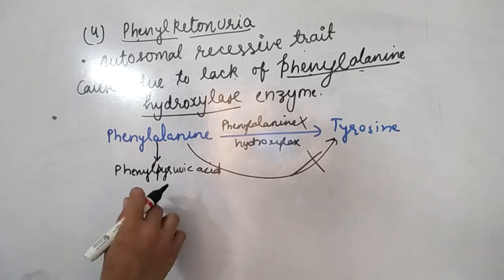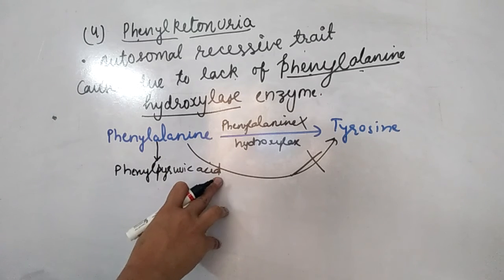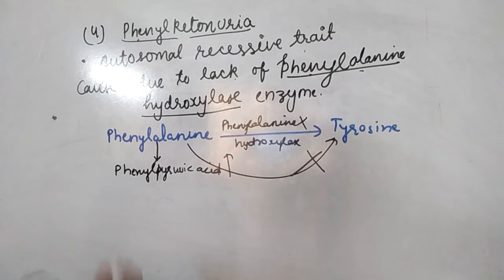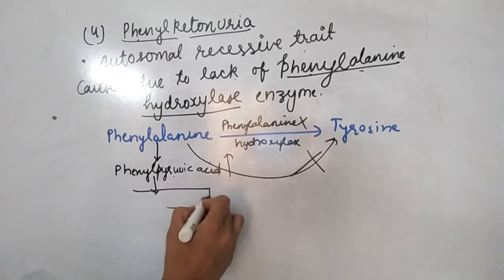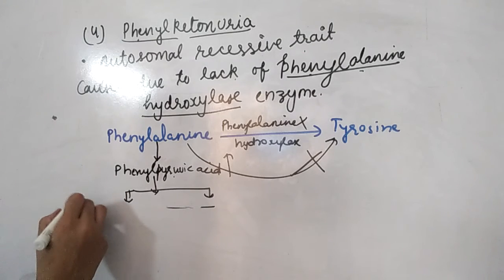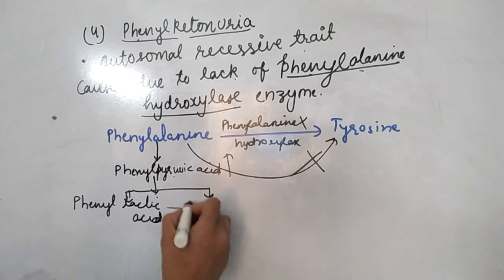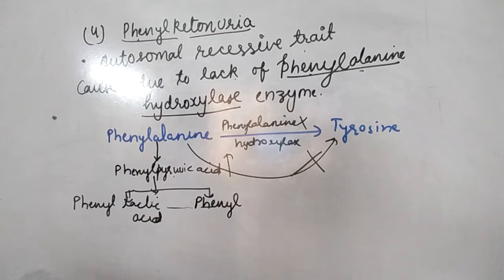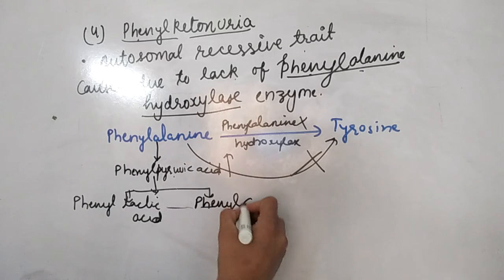Phenylpyruvic acid accumulates and reaches the brain. Phenyllactic acid is also formed. These are harmful substances that cause brain damage. After six months, mental retardation appears. The substances involved are phenylpyruvic acid, phenyllactic acid, and phenylacetic acid.